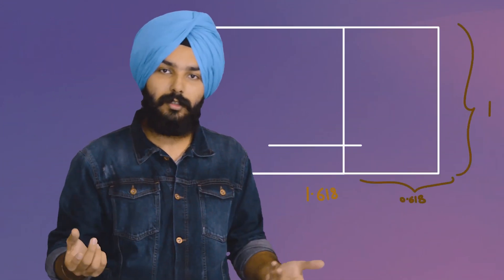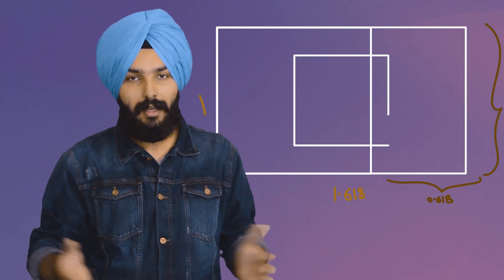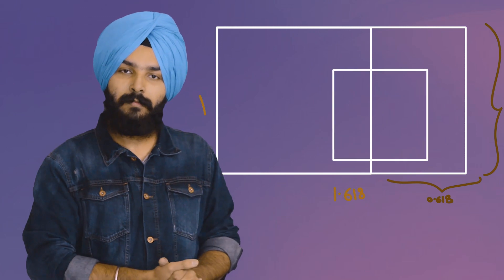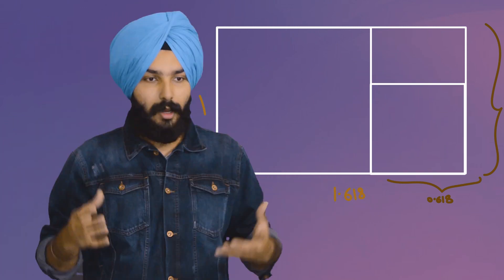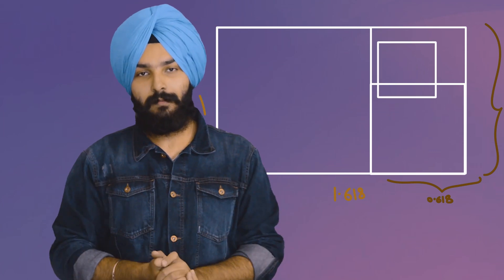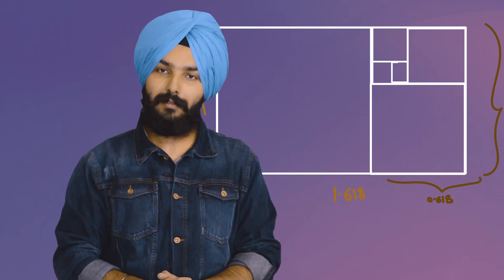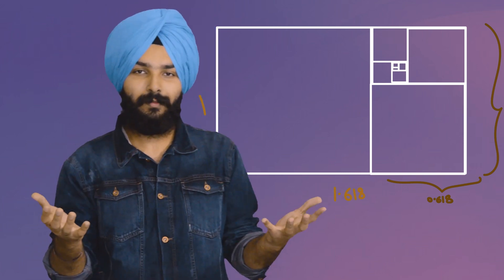Now let's apply this procedure to the existing rectangle, taking the square of the shortest side, which is 0.618, and putting it on this rectangle. And there we go — we have another rectangle. We can continue this process to infinity and have infinite golden rectangles.